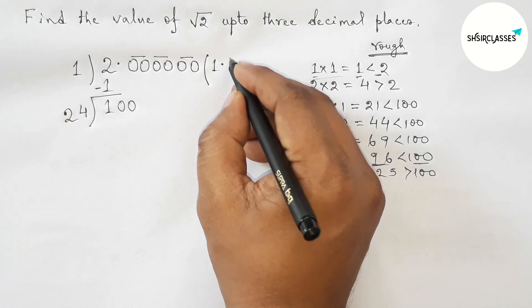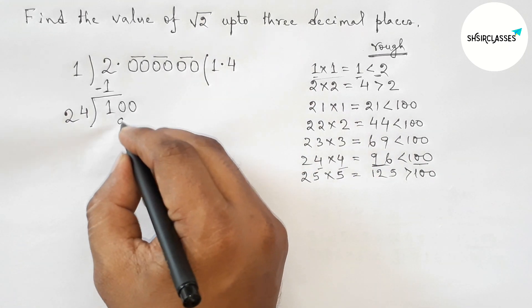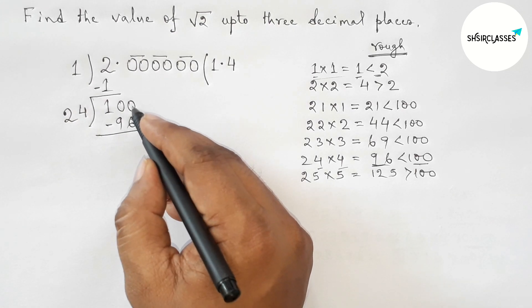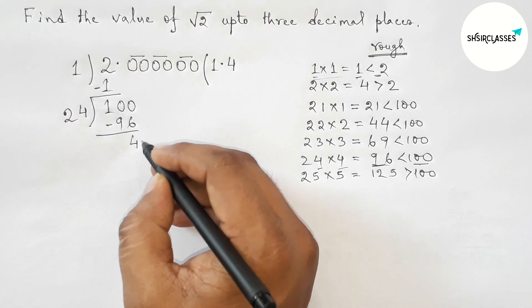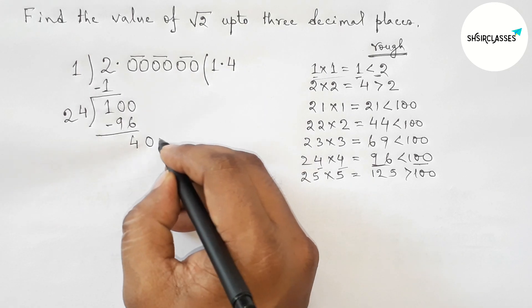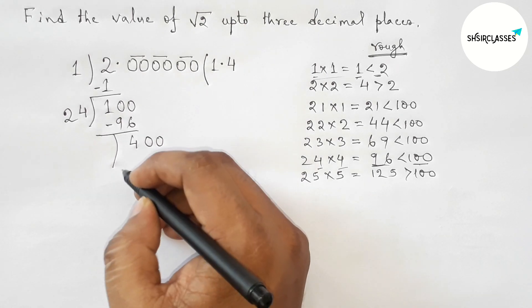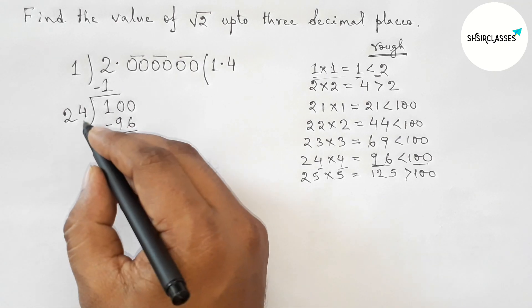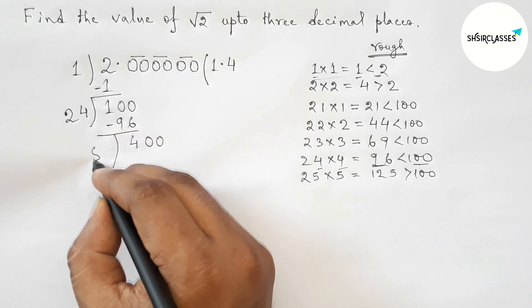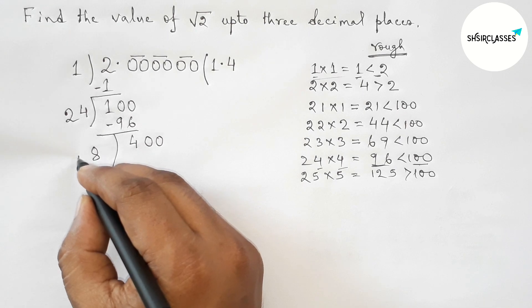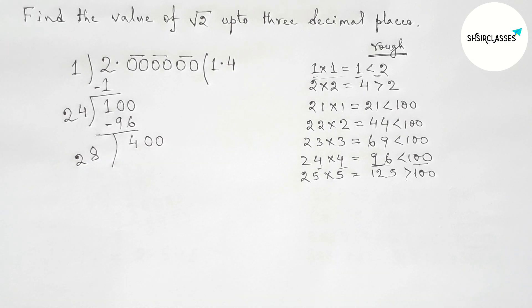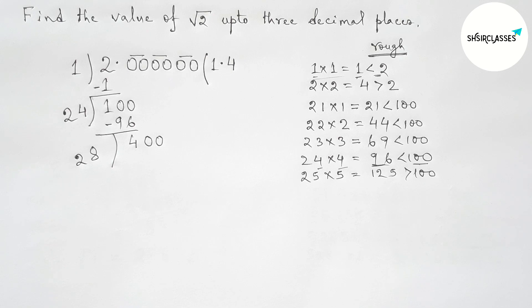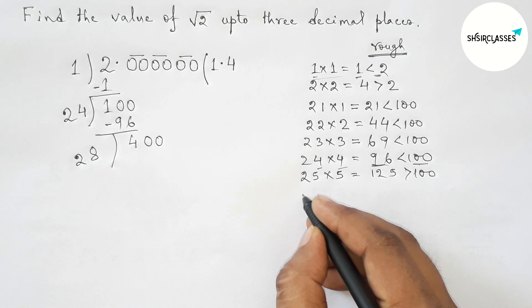So we choose 4. Put 4 in the quotient and compute 24×4=96. Subtracting: 100 minus 96 equals 4. Bring down the second pair of zeros to get 400. Draw a division line. Take double of 4 only, giving 8, so the new divisor starts with 28.